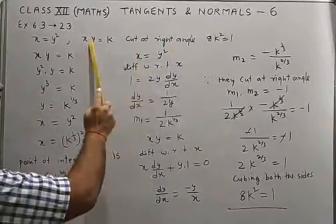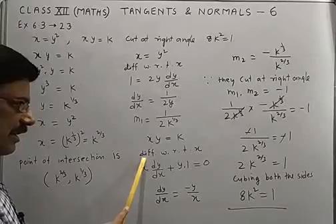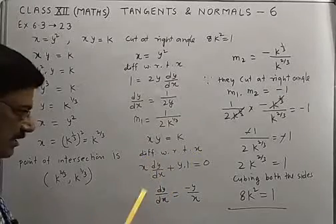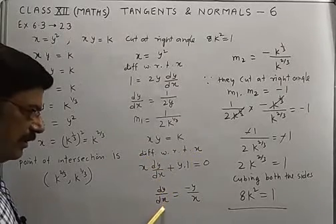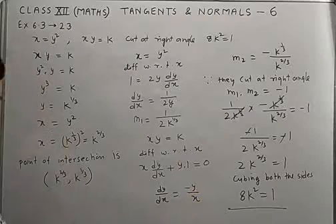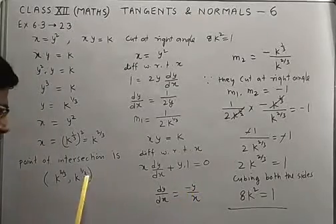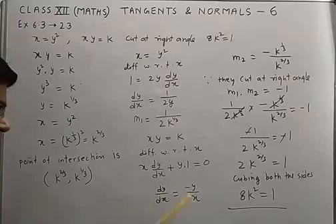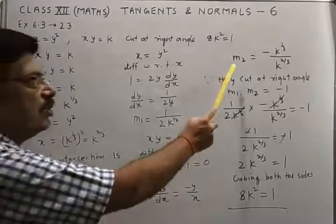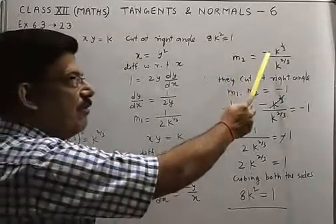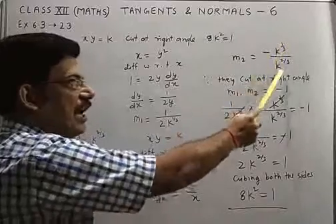For second curve xy = k given. Again differentiate with respect to x, you get dy/dx = -y/x. Replace y by k^(1/3), x by k^(2/3). You get m₂ = -k^(1/3)/k^(2/3).